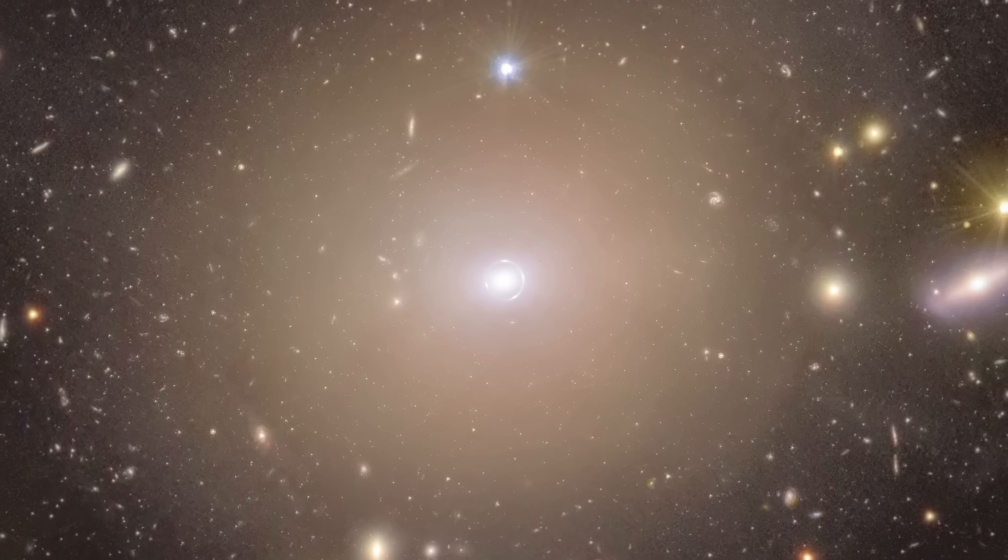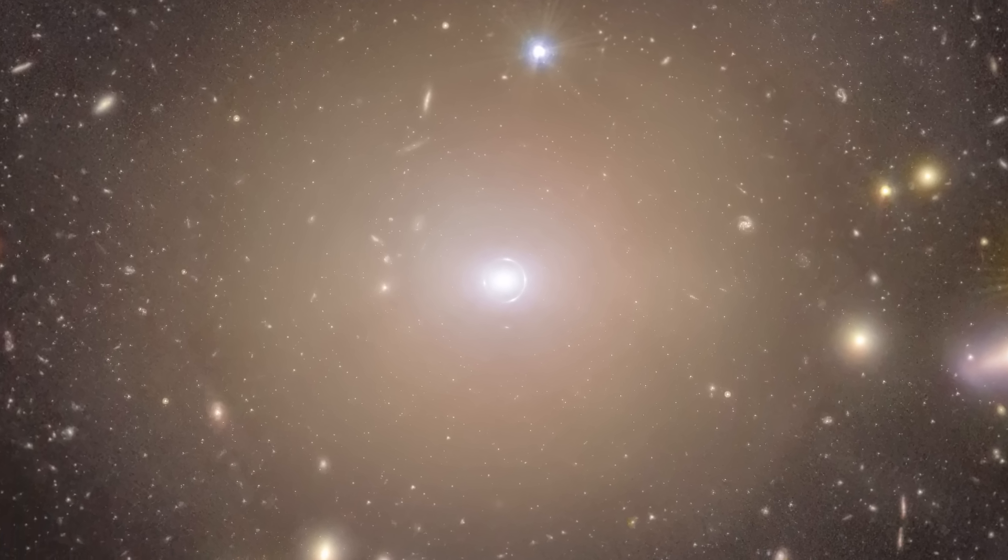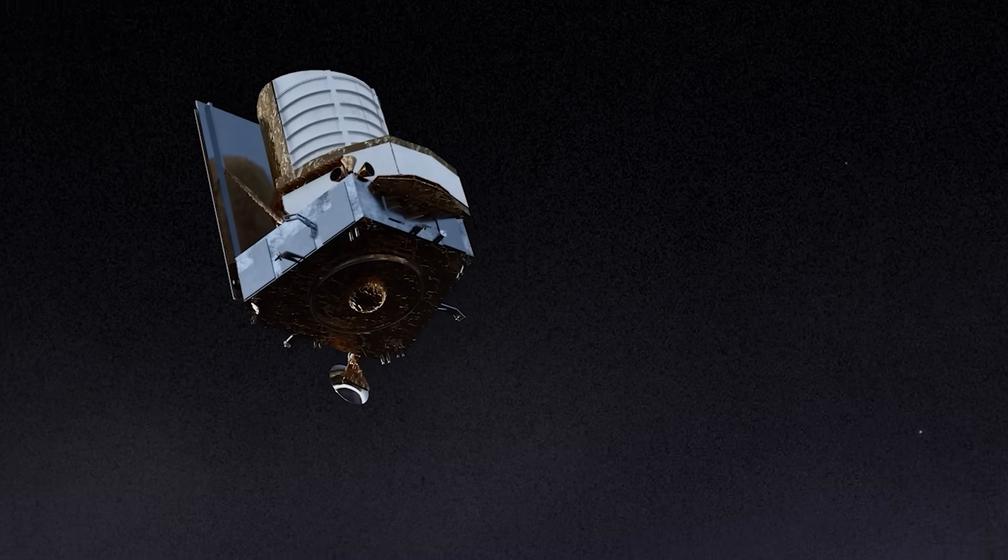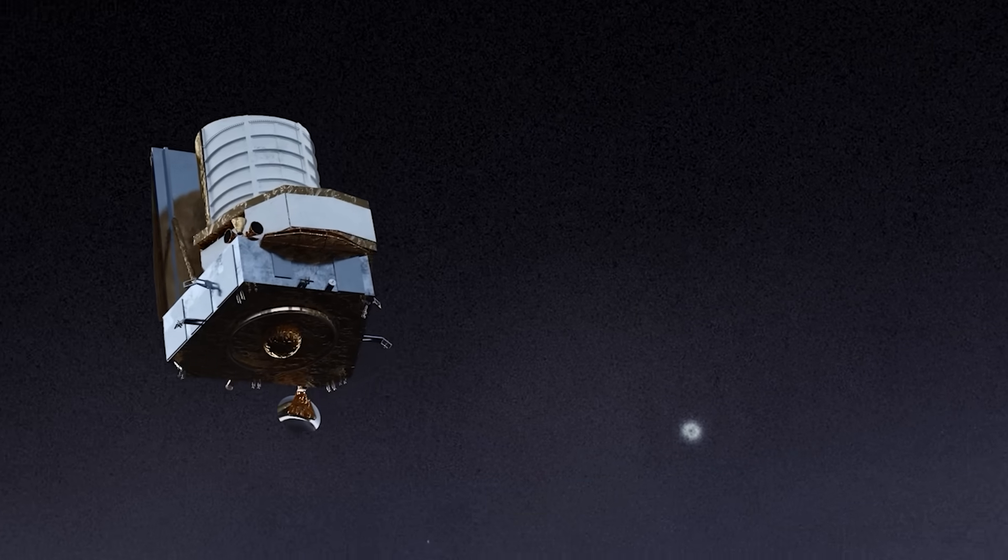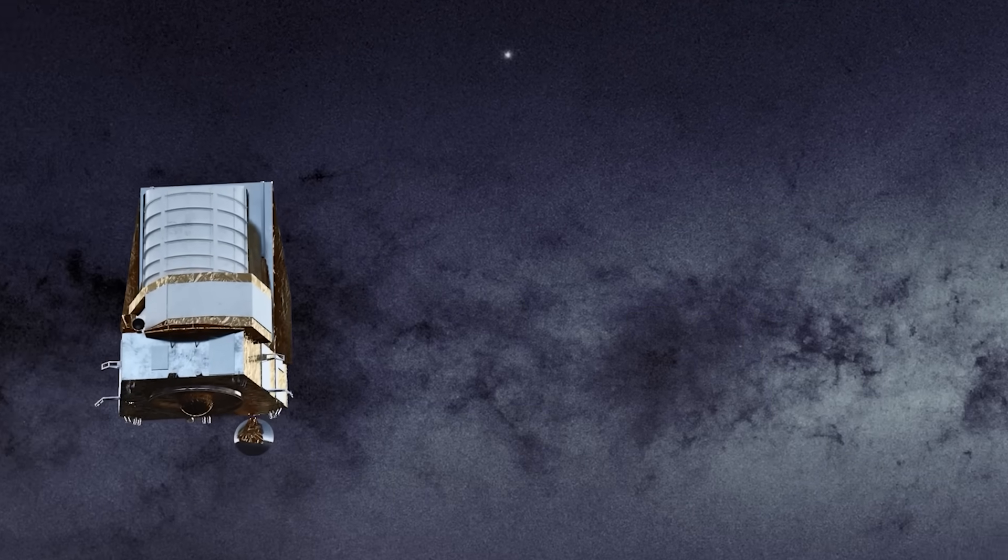Its light has been bent into a circle by the gravitational pull of NGC 6505. And here's the best part: Euclid captured this during its test phase, proving just how sharp and sensitive its instruments are.